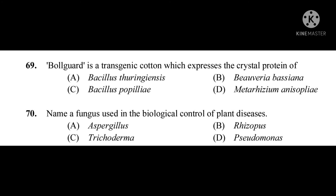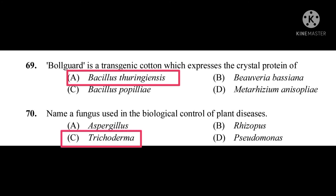Question number 69: Bollgard is a transgenic cotton which expresses the crystal protein of. The correct answer is Bacillus thuringiensis. Question number 70: Name a fungus used in the biological control of plant diseases. The correct answer is Trichoderma.